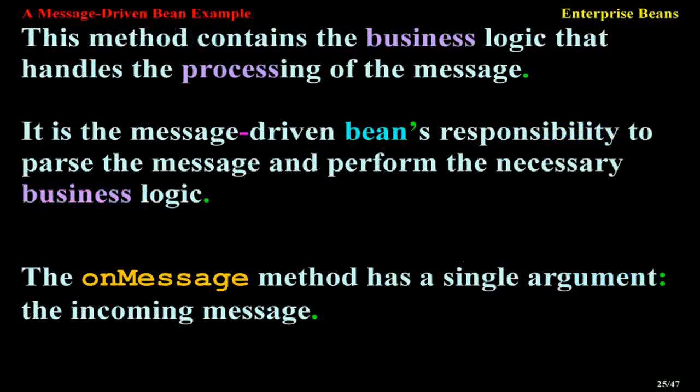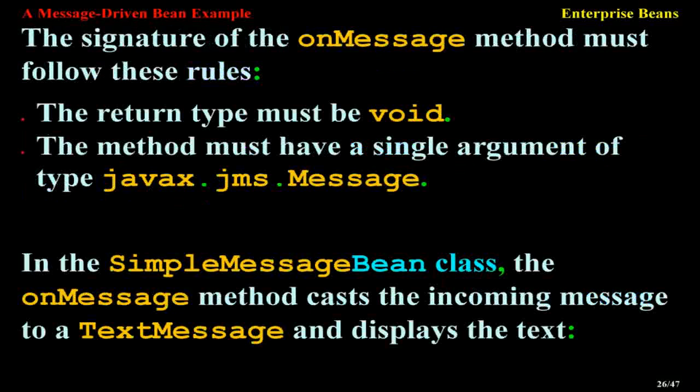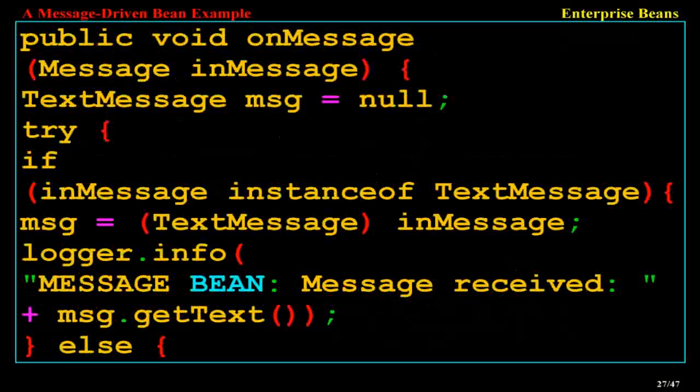The onMessage method has a single argument: the incoming message. The signature of the onMessage method must follow these rules: the return type must be void, and the method must have a single argument of type javax.jms.Message. In the simple message bean class, the onMessage method casts the incoming message to a TextMessage and displays the text.